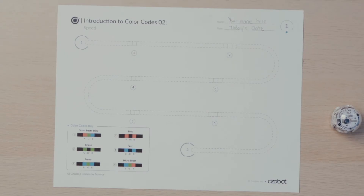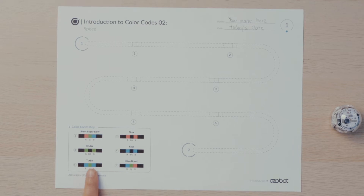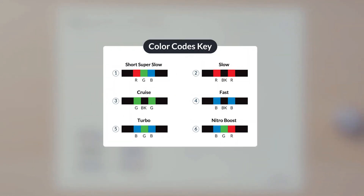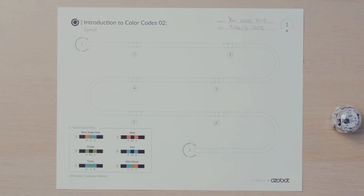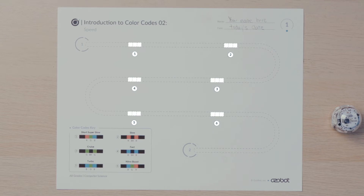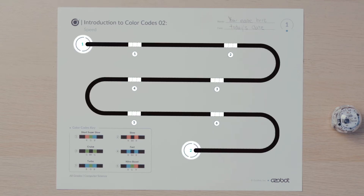To begin, let's look at the speed map. Can you find the color codes key? There are six speed color codes numbered one through six. Now look at the path your bot will travel along — there are six missing color codes also numbered one through six. You will use the color codes key to complete the pathway. After you put the missing color codes into the pathway, you will need to trace the rest of the line with black marker.